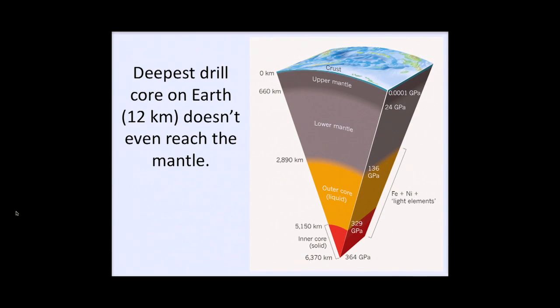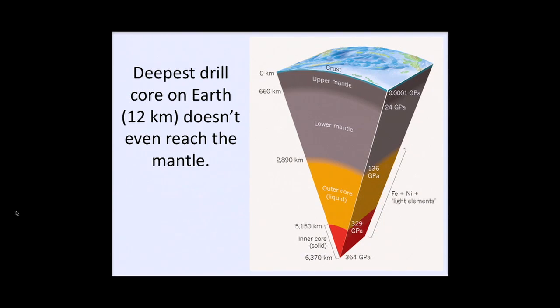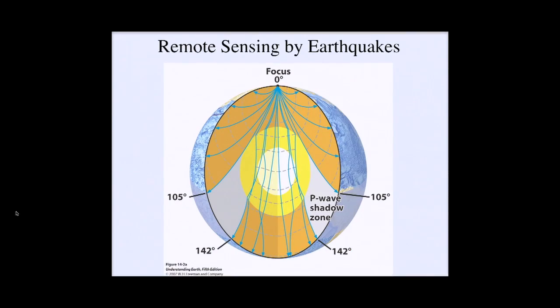So how do we learn about the interior of the Earth? The deepest drill hole that we have, which is in northwestern Russia on the Kola Peninsula, reaches only 12 kilometers down into the Earth. The continental crust is about 40 kilometers thick, so we're not even through the outermost skin of the Earth in terms of direct observation. What we have to rely on for actual observational information is remote sensing of various kinds.